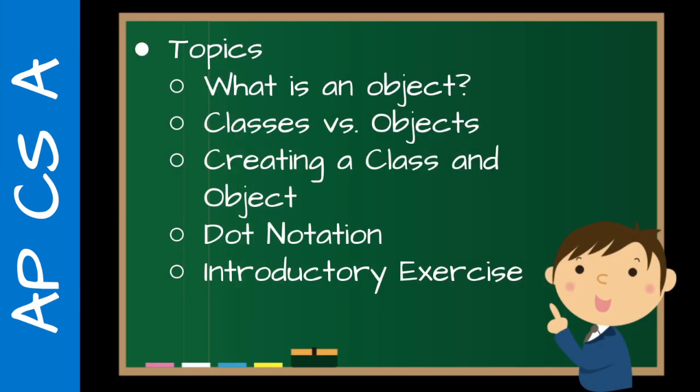So in this lesson we're going to be taking a look at what is an object — what does that actually mean? What's the difference between a class and an object? How do they relate? How do we create classes and objects? The idea of dot notation — how do we access attributes and methods? We've already seen this in the previous units with strings, but this is where we talk about it a little bit more directly.